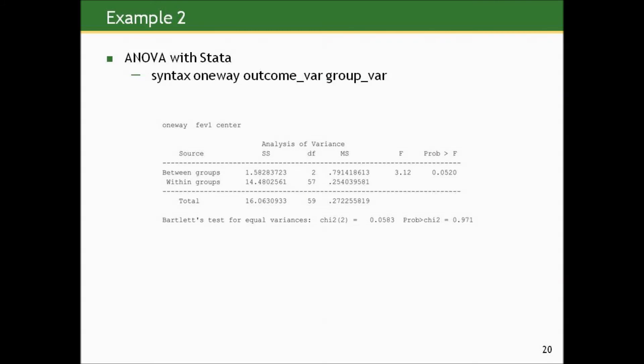If we actually wanted to then take into account sampling variation when comparing the three groups, we could do analysis of variance. And here's the ANOVA in Stata. The syntax is the word one-way for one-way ANOVA. Then you put your outcome variable. In our case, that's FEV1. Then you put your grouping variable. In our case, that's what I call center. So here, typing one-way FEV1 center, you get the following table.